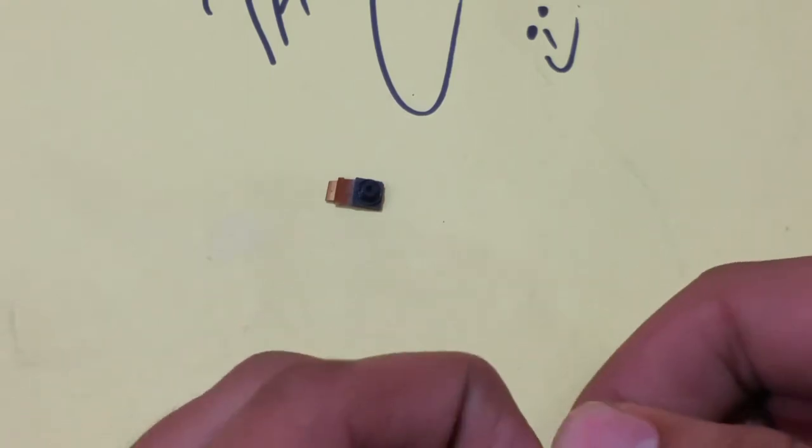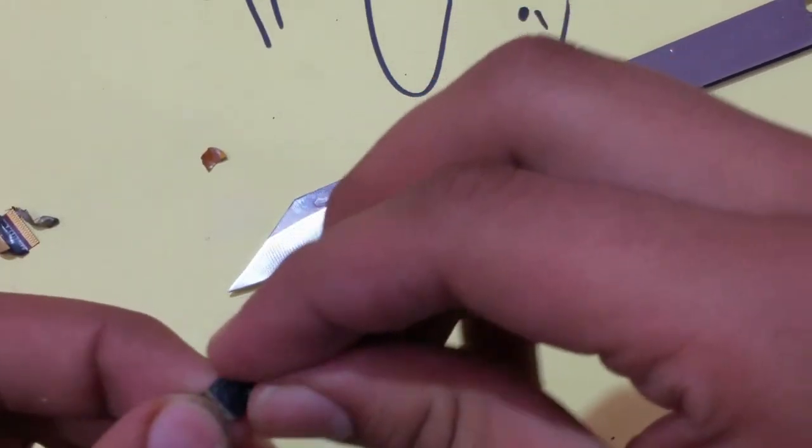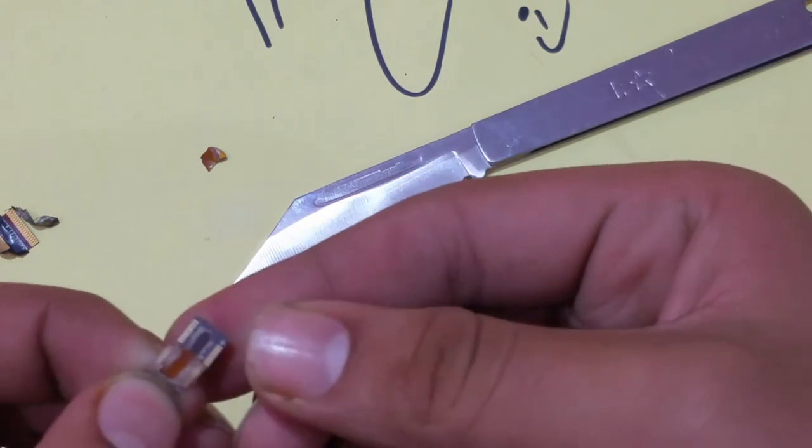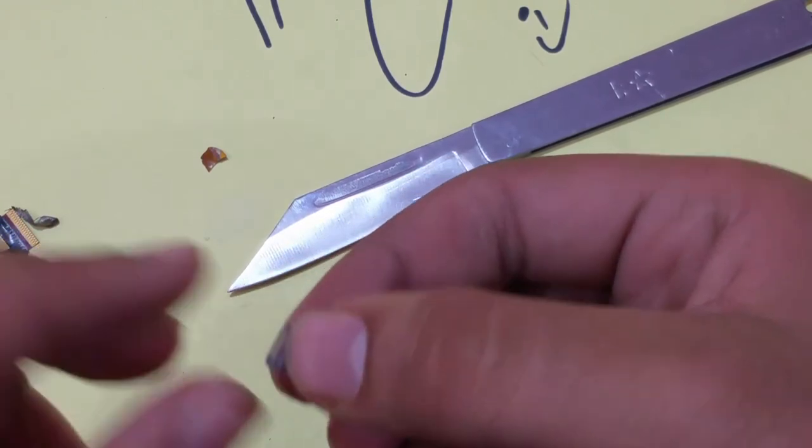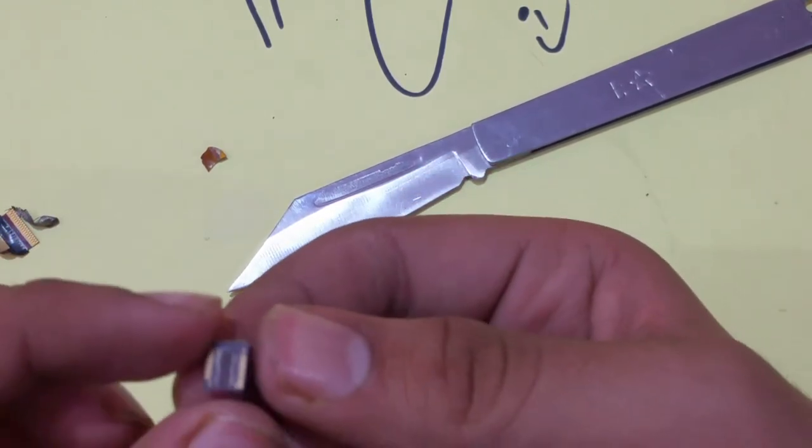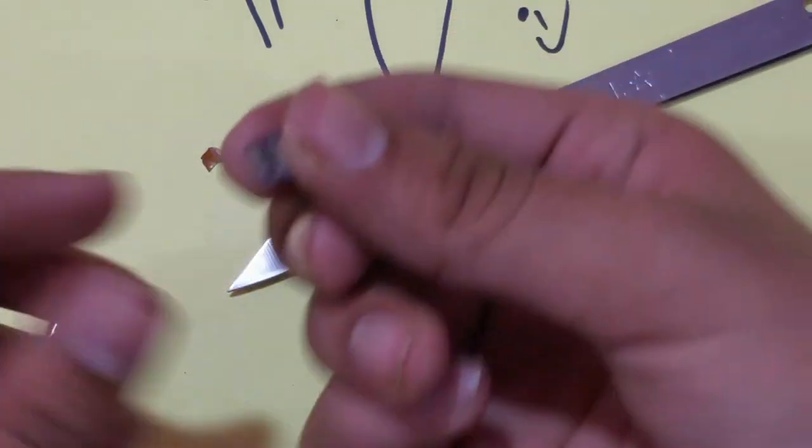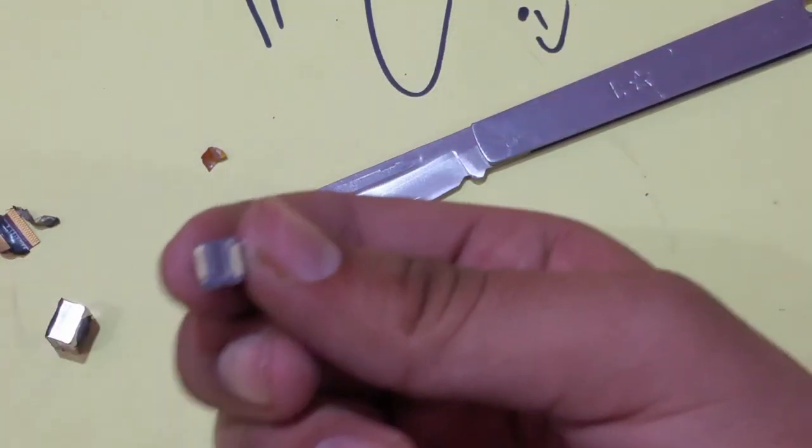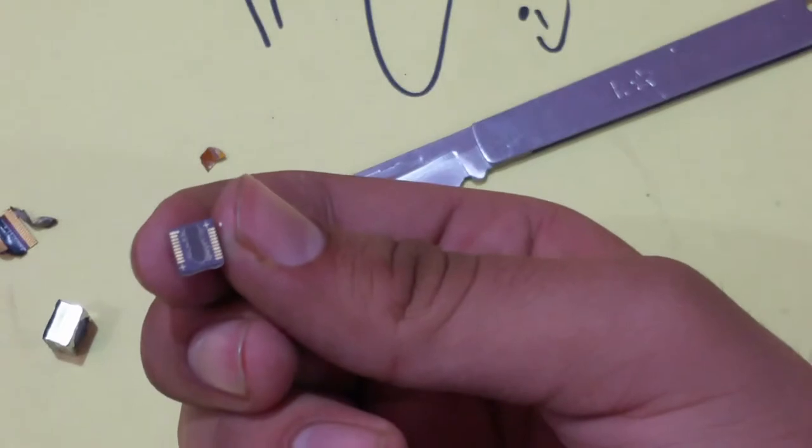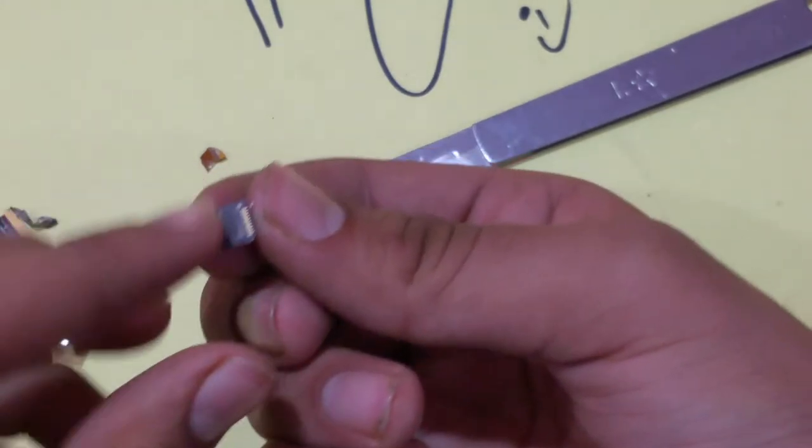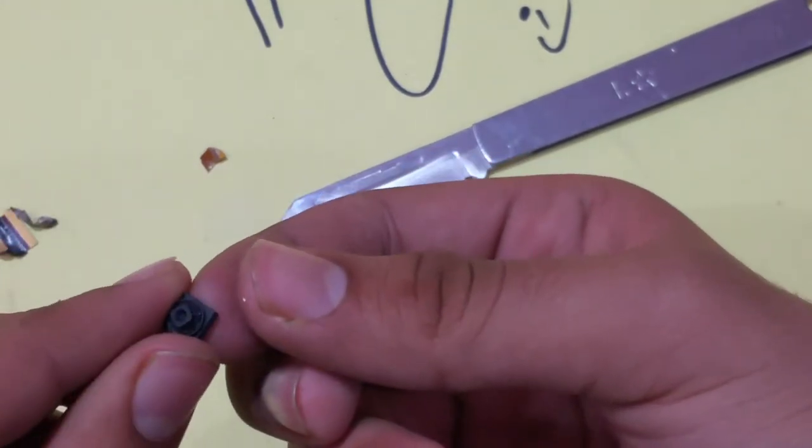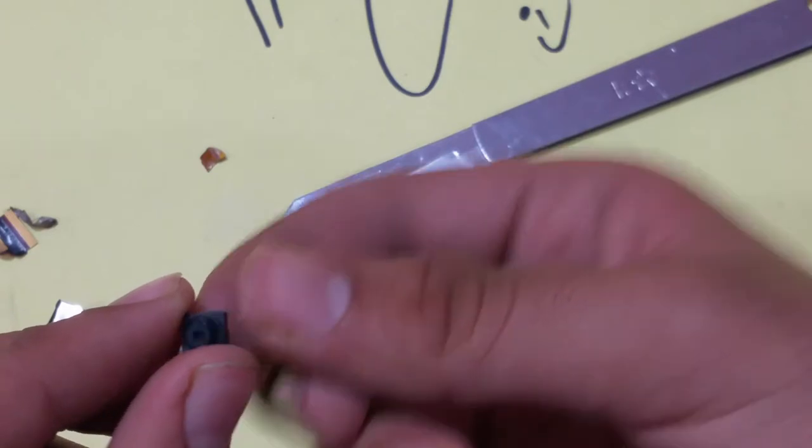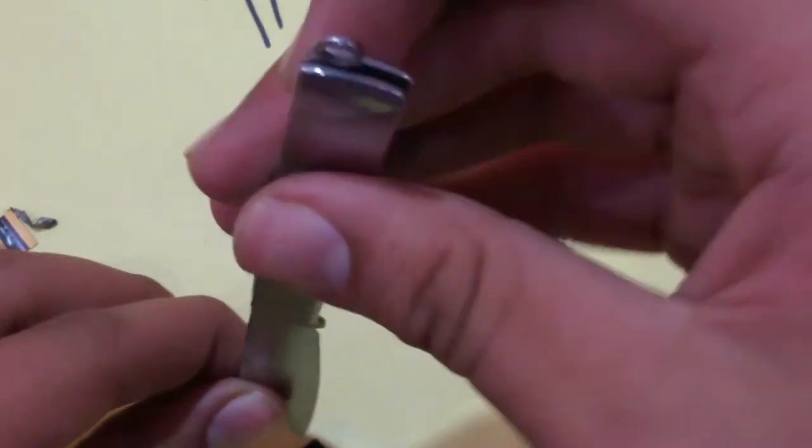Setting that aside and moving to the other camera. It was very easy to remove the lens housing from this one. Now we'll try to take apart the lens so we can get a closer look.